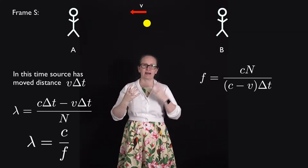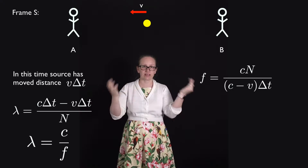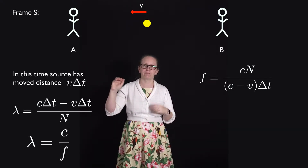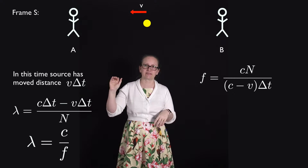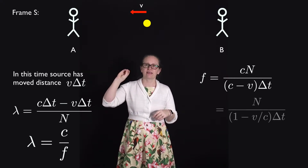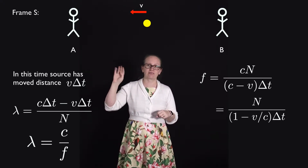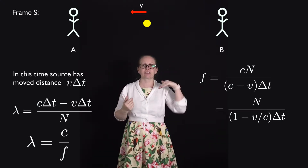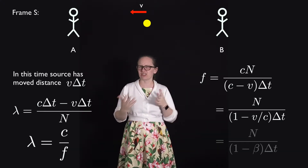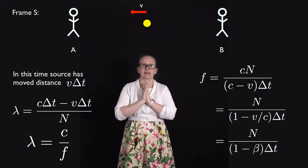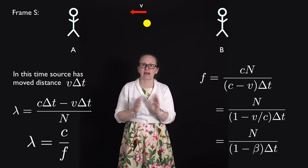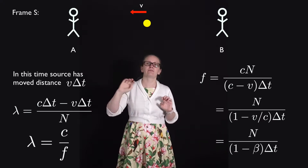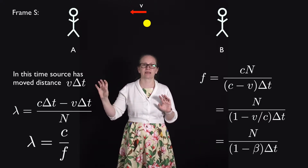To simplify, we divide both the numerator and denominator by C, the speed of light, giving N divided by (1 minus V/C) times delta T. We'll replace V/C with beta, which is used fairly often in relativity. So the frequency is equal to N divided by (1 minus beta) times delta T.